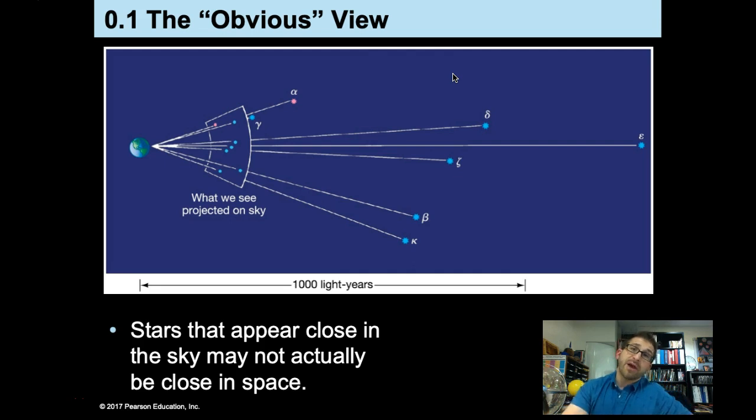Now, when we look up at the nighttime sky, we are also seeing things from the perspective, once again, of Earth. And so all of the stars in the night sky might appear to be on one of these crystalline spheres, as we discussed.